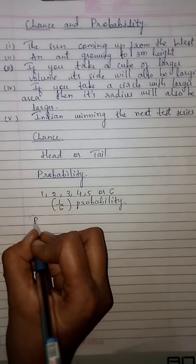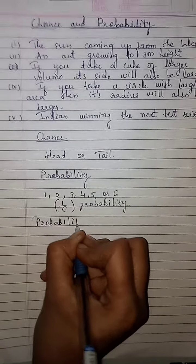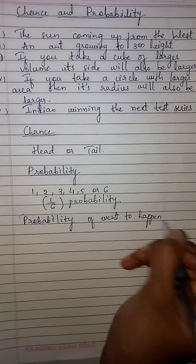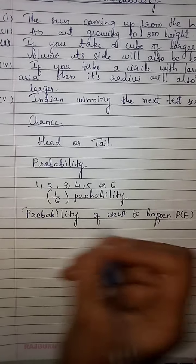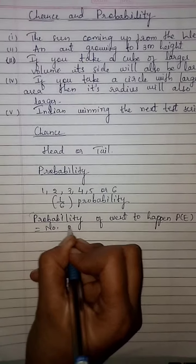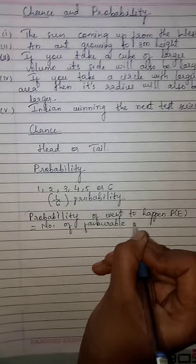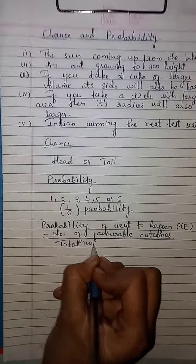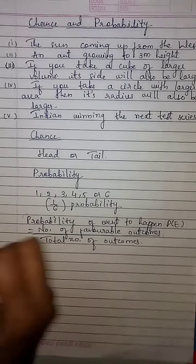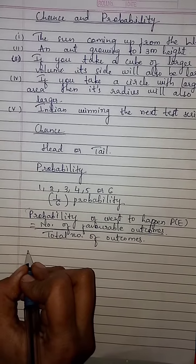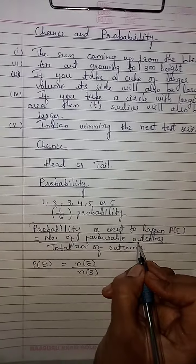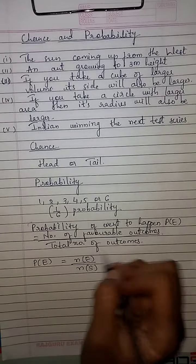For probability, we have one formula. The probability of an event happening, written as P(E), equals the number of favorable outcomes divided by the total number of outcomes. That is, P(E) = N(E) / N(S).